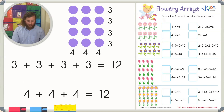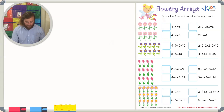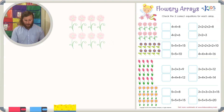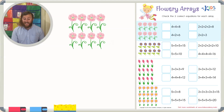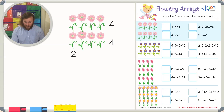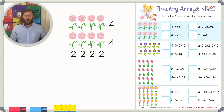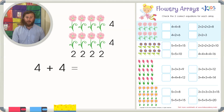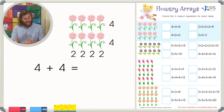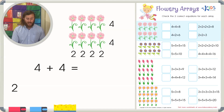So those are our two equations: three plus three plus three plus three, and four plus four plus four — both equal twelve. Let's read the directions for our worksheet: 'Flower arrays — check the two correct equations for each array.' For our first array of flowers, I see there are four flowers in each row and two flowers in each column. One equation we can use is four plus four, because there are four flowers in each row.